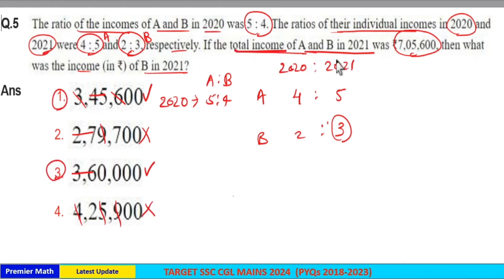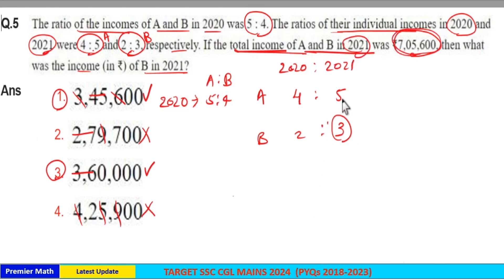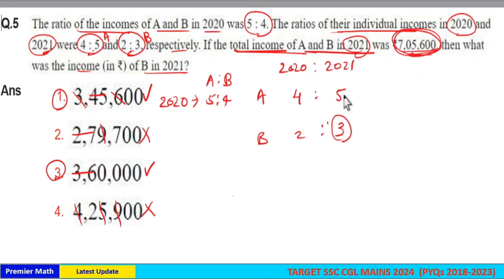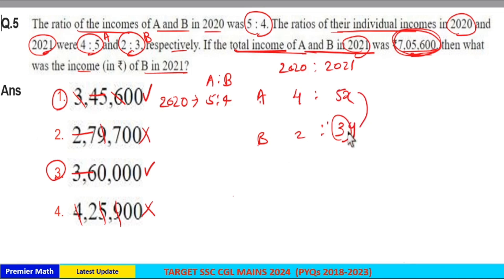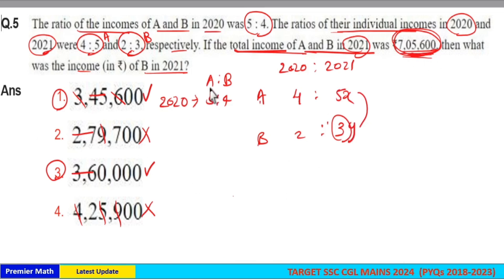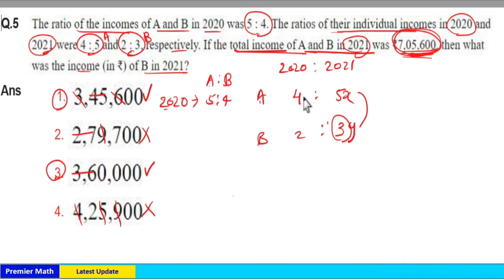The total income of A and B in 2021 was 7 lakh 5600, but we can't equate 5+3=8 parts as 7 lakh 5600. This is just 5x and 3y because there is no direct relation between A and B in 2021. So we equate 5x + 3y = 7 lakh 5600. But there is a relation between A and B in 2020, which is 5:4.